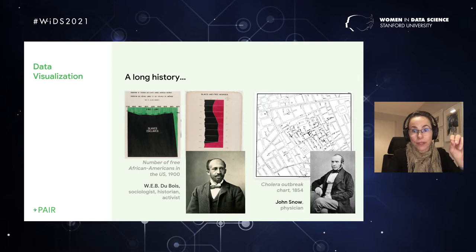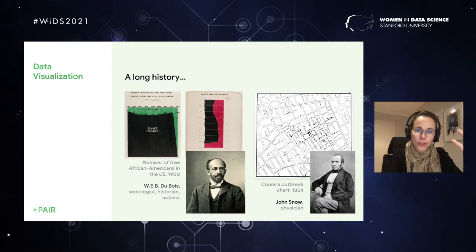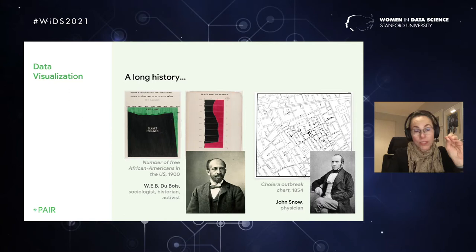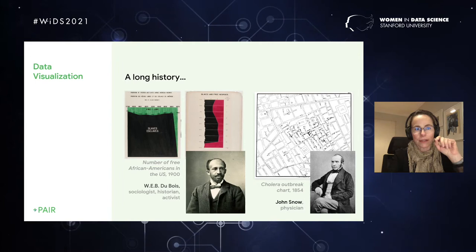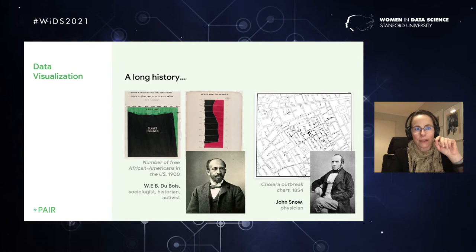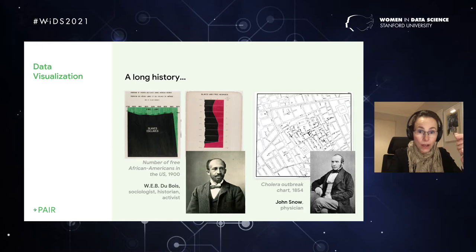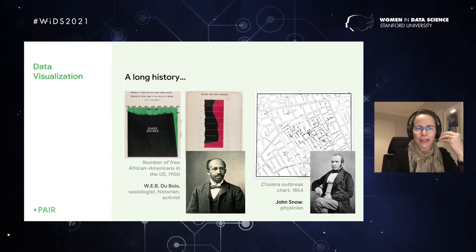We also have activists and sociologists. W.E.B. Dubois, he created these amazing graphs, really creating data portraits of the African American situation in the United States around the turn of the century. Some of the examples I'm showing here were created for the Paris Fair in 1900. One of the things that I think is also really interesting about his work is not only the content, the kind of data he's showing, but the aesthetics of how he's choosing. He's really taking advantage of the fact that this is a visual language. And a lot of his graphs are incredibly beautiful.